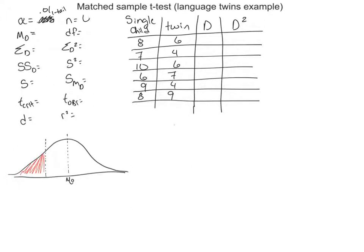We have six participants in our study. The first thing we need to do is find the difference scores between them. We take 8 for the single child and 6 for the twin, giving a drop of 2. These are 3-year-olds — think toddlers. This language acquisition test measures how many words they know or can recognize.